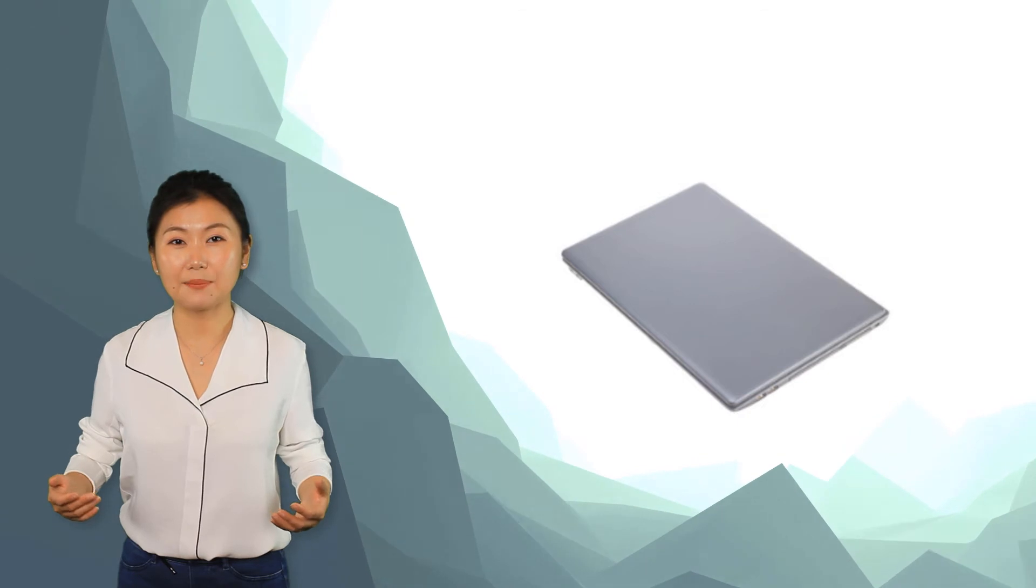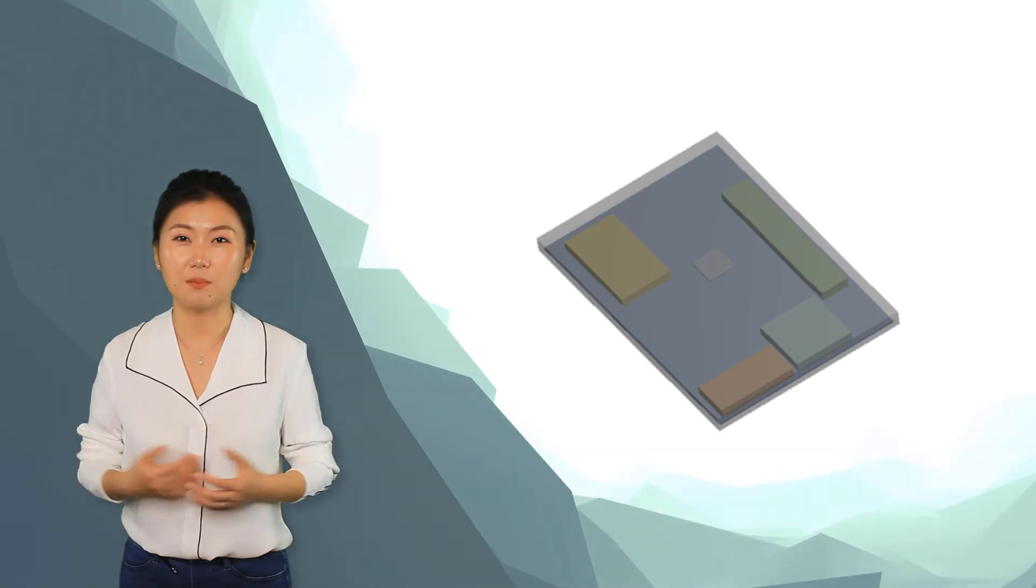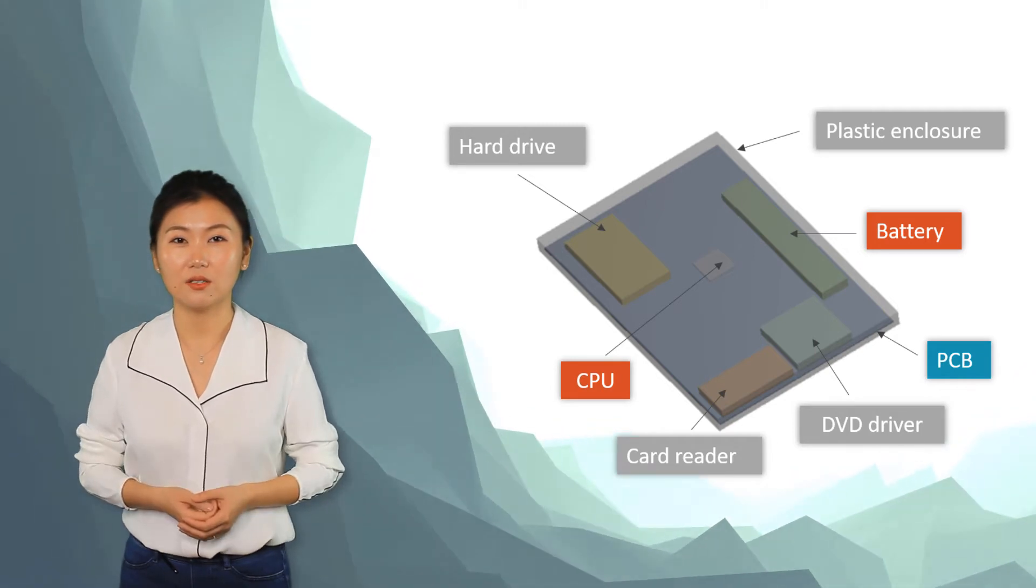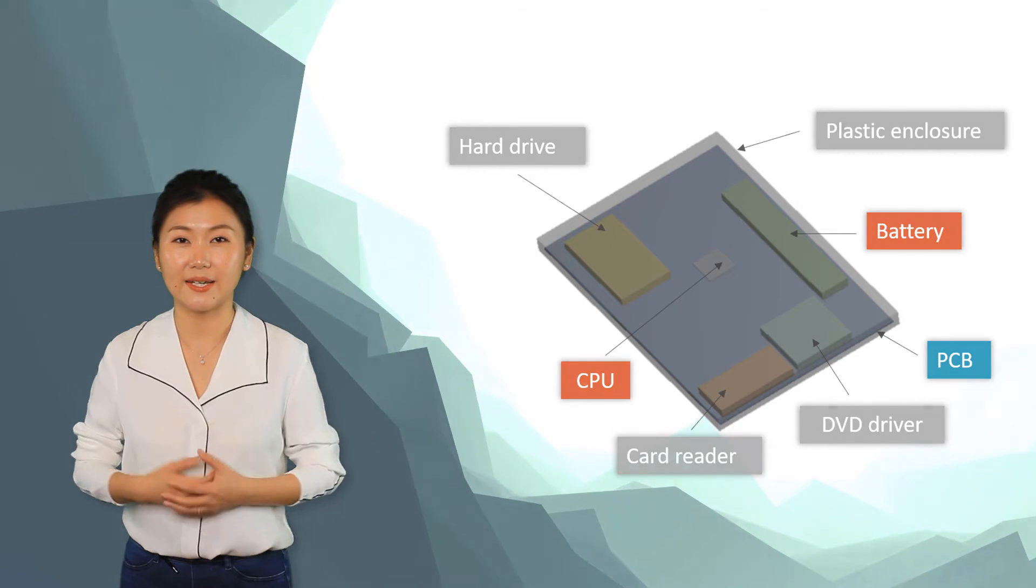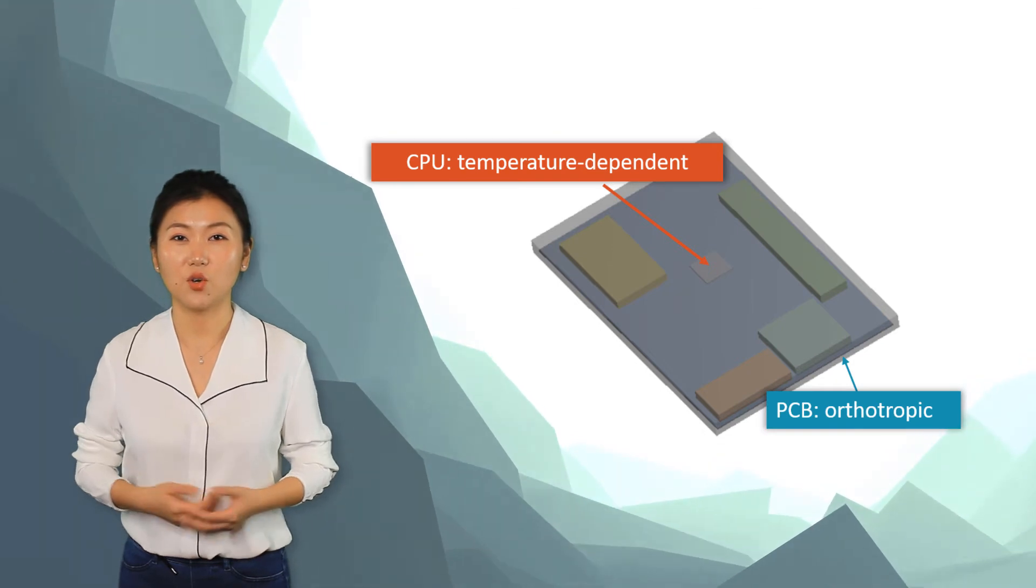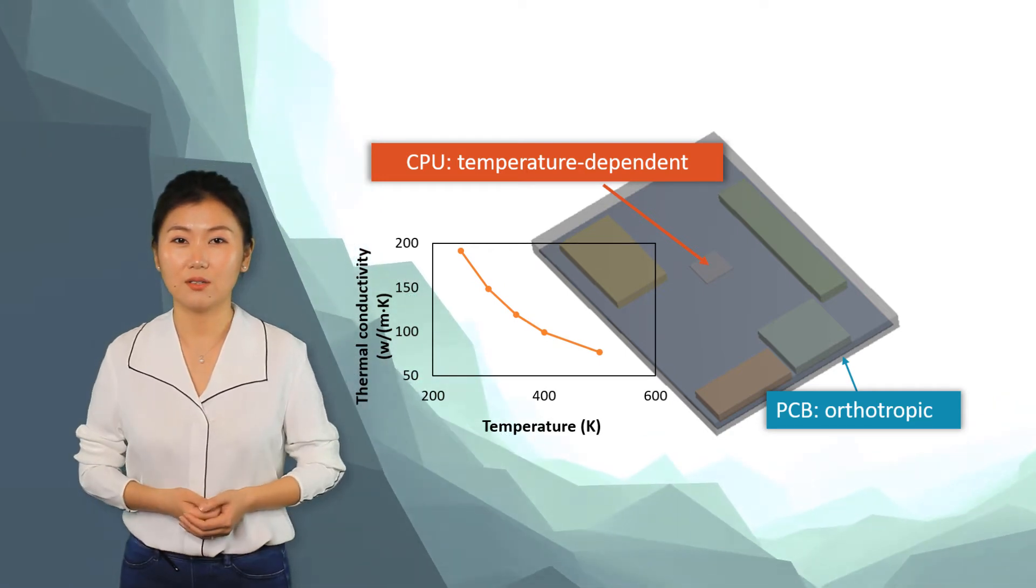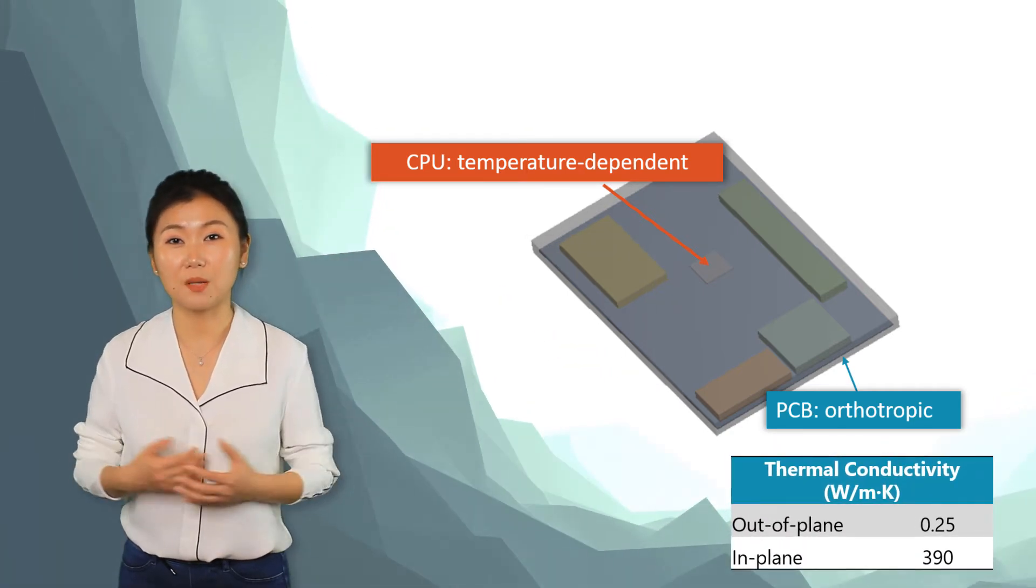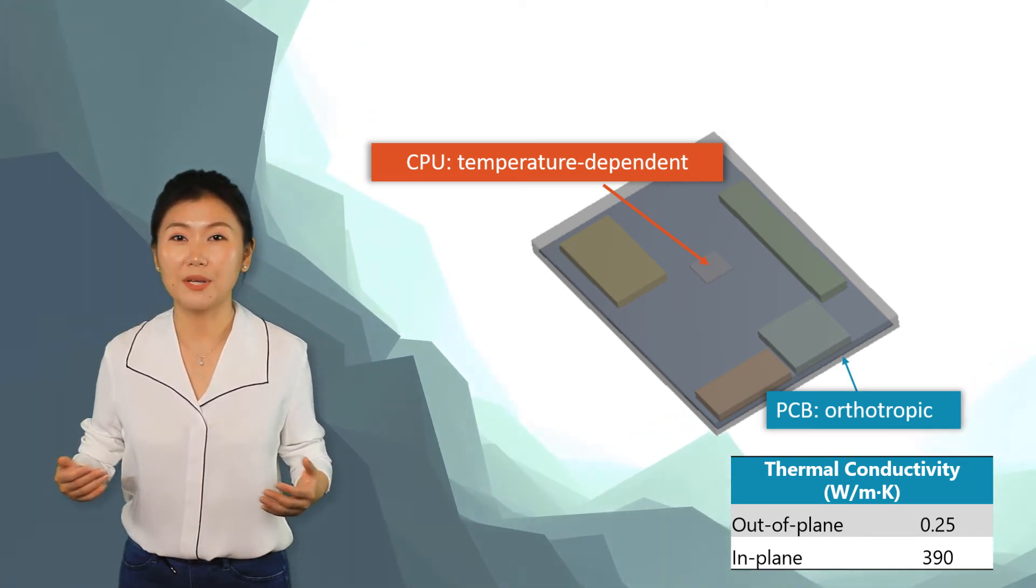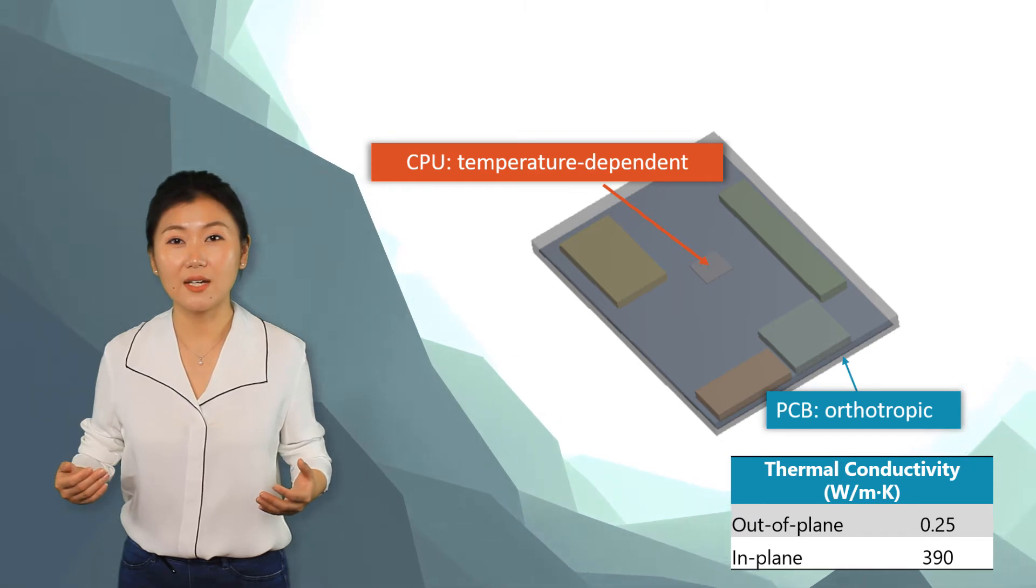Let's have a look at the laptop geometry for our simulation. It consists of a PCB with various electronic components, including CPU, battery, hard drive, DVD driver, and card reader. All these components, including the PCB, are enclosed by a plastic case. Different components of the laptop are composed of different materials. For example, the CPU is composed of silicon whose conductivity varies with temperature. The PCB board is made of an orthotropic material. In the through-thickness direction, the thermal conductivity is 0.25 Watt per meter kelvin. In the in-plane direction, the value is much larger. It's 390 Watt per meter kelvin.